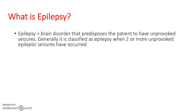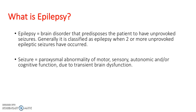So what is epilepsy? It is a brain disorder that predisposes a patient to have unprovoked seizures, and it can be diagnosed as epilepsy when a child has two or more unprovoked epileptic seizures. A seizure is a paroxysmal abnormality of motor, sensory, autonomic and cognitive function, and it is due to transient brain dysfunction, which means it comes and goes quite quickly.